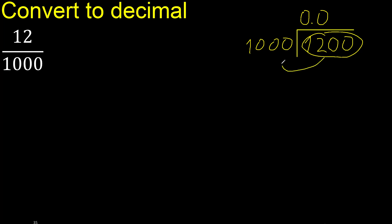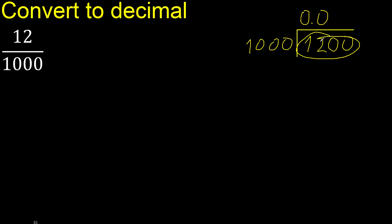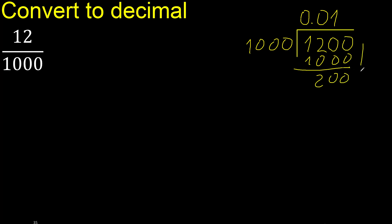1200 is not less, therefore: 1000 multiplied by which number is nearest to 1200 but not greater? Multiply by 2 is greater, multiply by 1 — that is 1000. Subtract. There is no number that goes down, therefore complete with 0. The point is here.